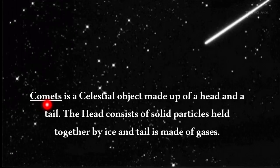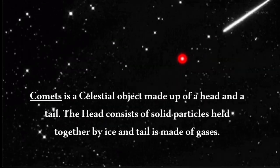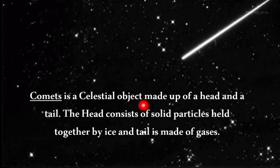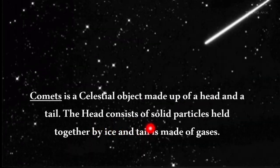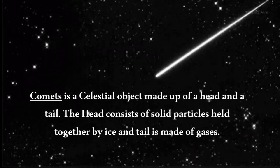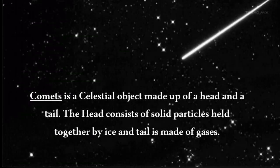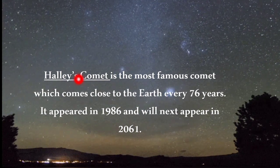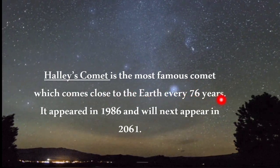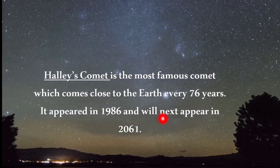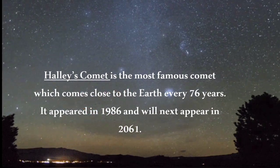A comet is a celestial object made up of a head and a tail. The head consists of solid particles held together by ice, and the tail is made up of gases. Halley's Comet is the most famous comet, which comes close to the Earth every 76 years. It appeared in 1986 and will next appear in 2061.